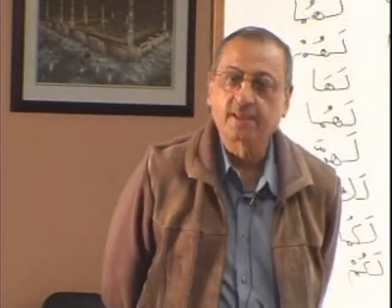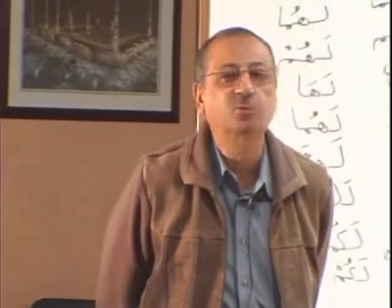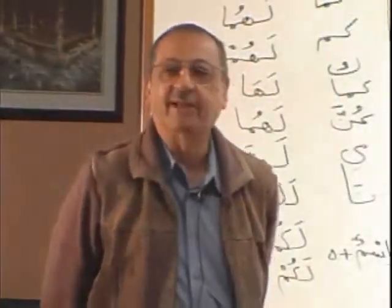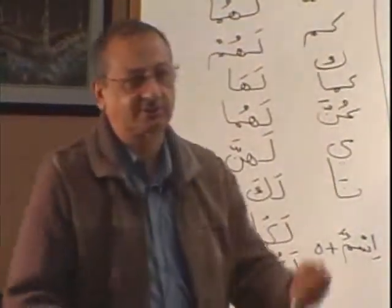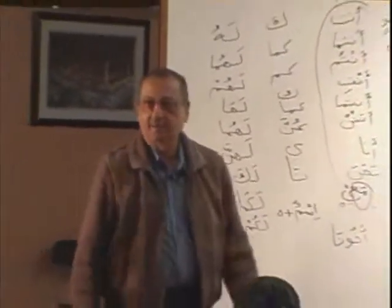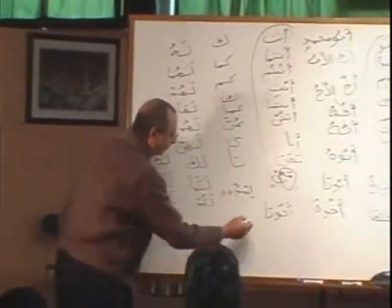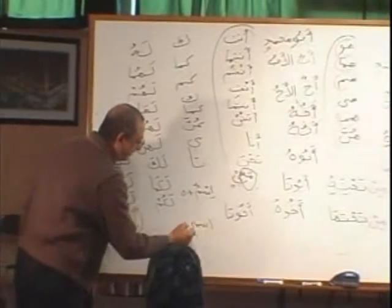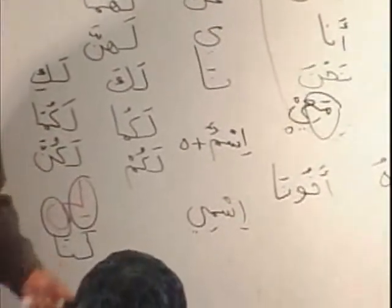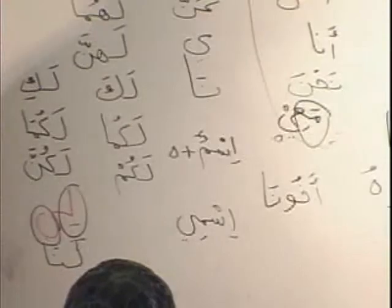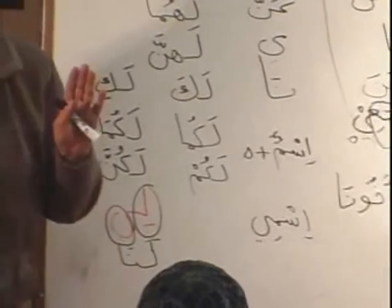Ismuhu, ismuha, ismuka, ismuki, and ismi — five pronouns. Are you with me? If I say ismuhu, it is mudaf and mudafili. If I say ismi, the ya is mudafili. I always tell students: break it, see what's inside. How many words are there? Two — ism and a pronoun.